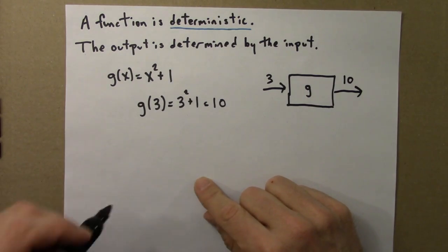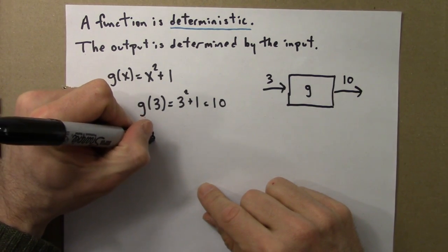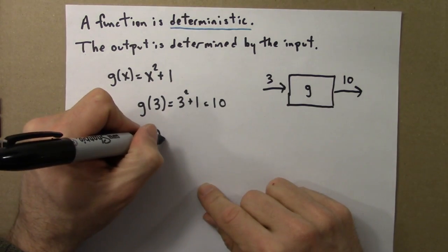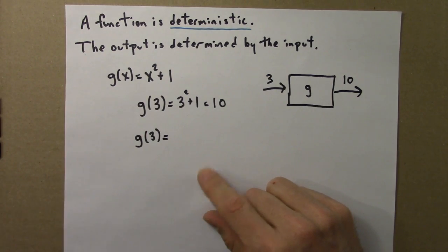Now, suppose I ask again, what's g of three? And the answer, well, we've already done it, it's ten.